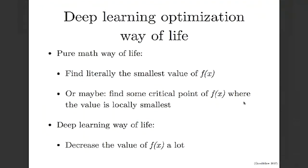I think of the way we optimize deep learning functions as more of a way of life than a strictly mathematical discipline. If you approach optimization from a pure math point of view, you're usually looking to find literally the smallest value of f(x) or a critical point that's locally the smallest in some neighborhood. For deep learning we have a more pragmatic approach: our goal is to just decrease f(x) a lot and make the error rate go down until it's low enough for some engineering application. Actually finding a critical point might be very difficult.